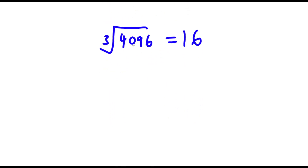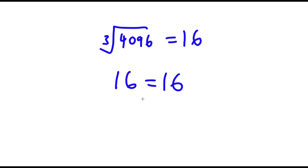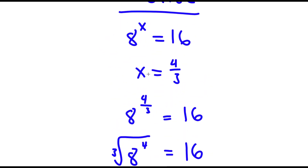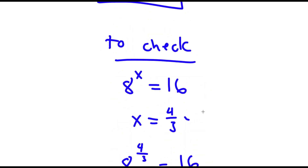So I have the cube root of 4,096 is equal to 16. And the cube root of 4,096 is essentially asking what to the power of 3 equals 4,096 — and the answer to that is 16. So I have 16 is equal to 16, and because this is right, our answer is right as well.